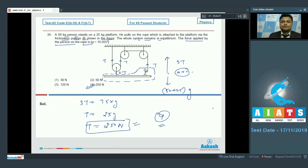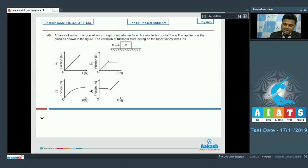Moving on to the next, that is number 40. Here is question number 40. A block of mass m is placed on a rough horizontal surface. A variable horizontal force F is applied on the block as shown in the figure. The variation of frictional force acting on the block varies with applied force capital F. Now, this is friction force on y-axis in Newton, this is applied force in Newton. Now if applied force is zero, friction will also be zero. So the graph will start from the origin. Now for some point of force, the friction will be self-adjusting and static friction.